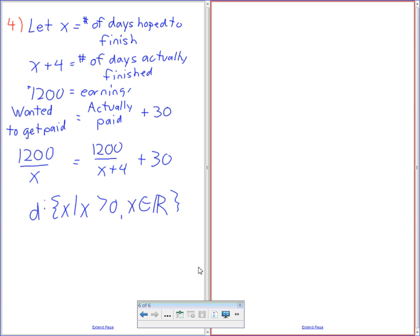I'm going to multiply everything by x. That's going to change into 1200x all over x equals 1200x all over x plus 4 plus 30x. That equals 1200 equals 1200x all over x plus 4 plus 30x.